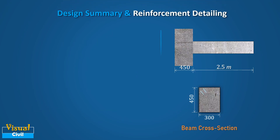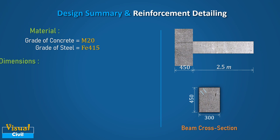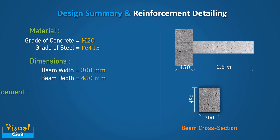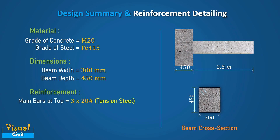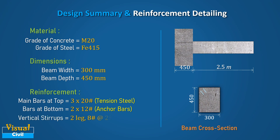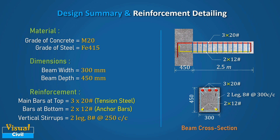Finally, let us summarize the design and reinforcement detailing. A rectangular cantilever beam is designed with M20 grade concrete and Fe415 steel. The width of the beam is 300 mm and the depth is 450 mm. Three number of 20 mm diameter bars are provided as main reinforcement at the top, while 2 number of 12 mm diameter bars are provided as anchor bars at the bottom. Two-legged 8 mm diameter vertical stirrups are provided at a spacing of 300 mm center-to-center using Fe415 steel.